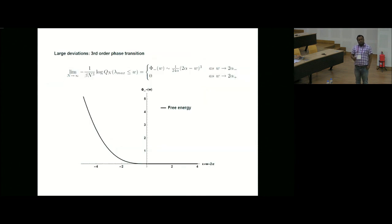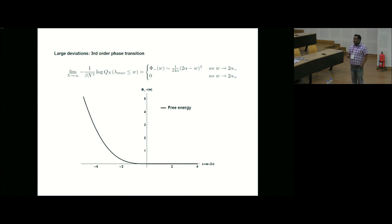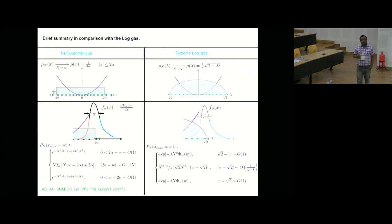In summary, the 1D Coulomb gas differs from the log gas (random matrix eigenvalues) in several ways: the average density is uniform rather than semicircular; typical fluctuations of x_max are of order 1/N rather than N^{-2/3}; and the limiting distribution is not Tracy-Widom but comes from a non-local eigenvalue equation. Nevertheless, a third-order phase transition persists. Thank you.